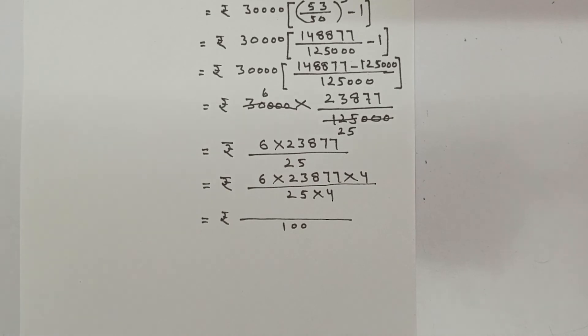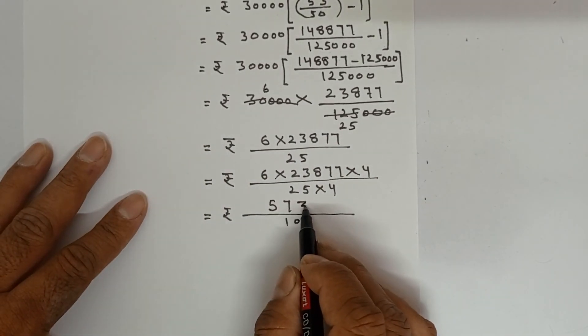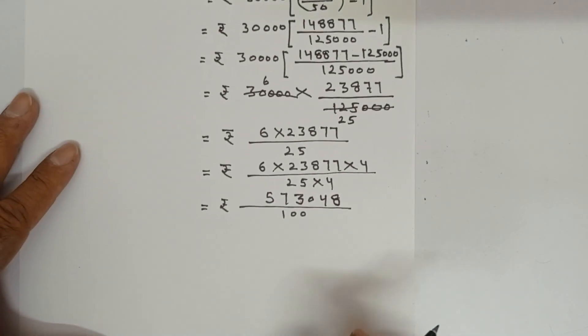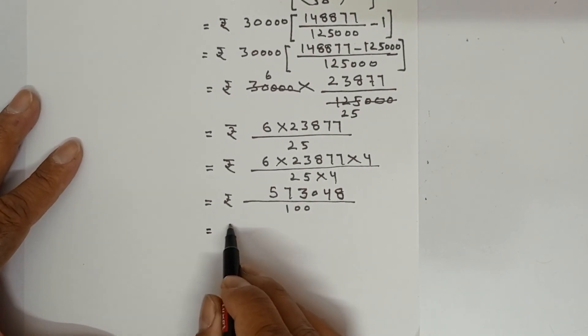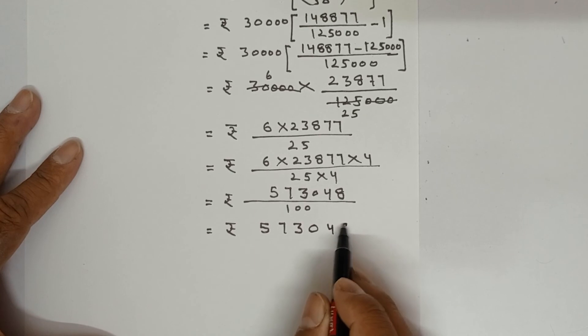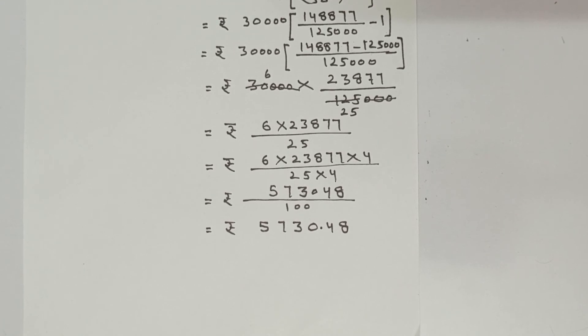So rupees in the denominator, it will become 25, 4s are 100. So you can multiply 23,877 with 6, 4s are 24. You will get 573,048. Decimal will be substituted 2 digits back. Rupees. This is 57,30.48. Here decimal will come. So compound interest has come 5,730.48.